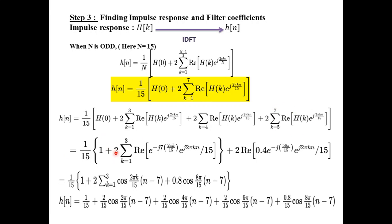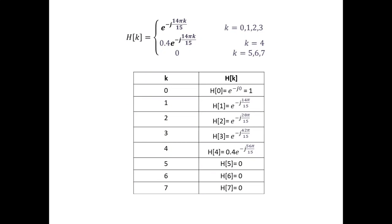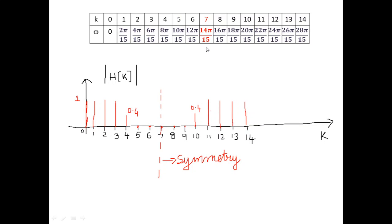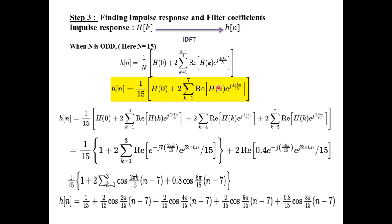1 by 15 plus 1 by 2, k equal to 1 to 3, h of k value is given as e power minus j 7. It is nothing but e power minus j alpha into omega. So 7 into omega. You can see that h of k value for k equal to 4 is nothing but from the tabular column itself, for k equal to 4, it is nothing but 0.4, 0.4 into e power minus j 14πk by 15. So we should be careful in choosing these values. So 0.4 e power minus j 56π by 15 e power minus jk 2π by n. This term will go to 0.